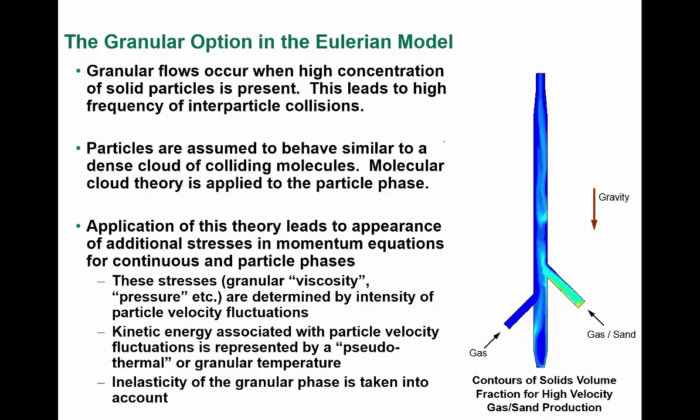The granular option in the Eulerian model also applies when gravity is involved. In one example, gas and sand are injected at one end with gravity involvement, and contours of solid volume fractions of high-velocity gas production are getting influenced — observable through these particular cases. The granular option in the Eulerian model occurs when high concentration of solid particles is present, leading to high frequency of inter-particle collisions. In that case, we prefer the Eulerian model — it's not ordinary flow but involves particle collisions, and particles are assumed to behave similar to a dense cloud of colliding molecules.